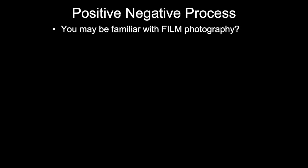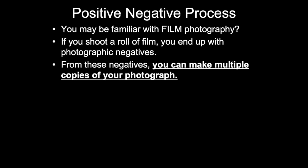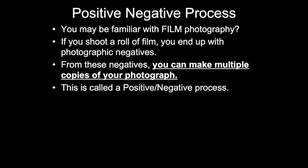You may be familiar with film photography. If you shoot a roll of film, you end up with photographic negatives. From these negatives, you can make multiple copies of your photograph. This is called a positive-negative process.